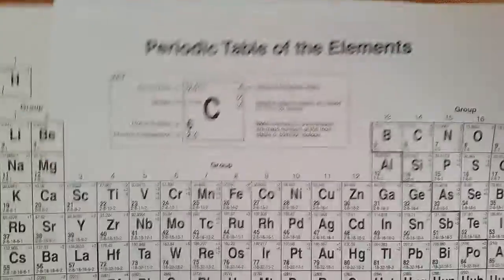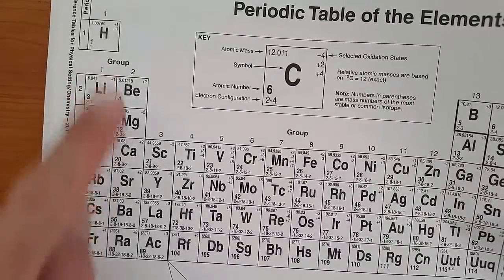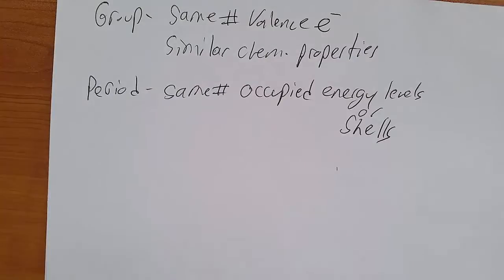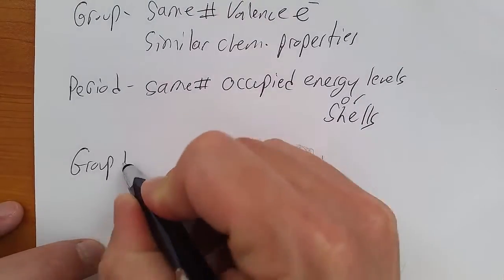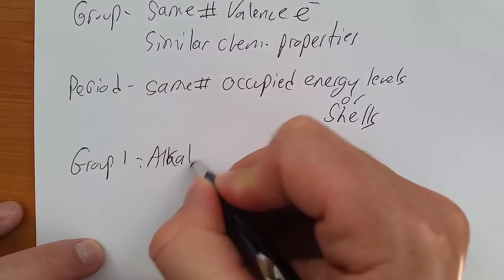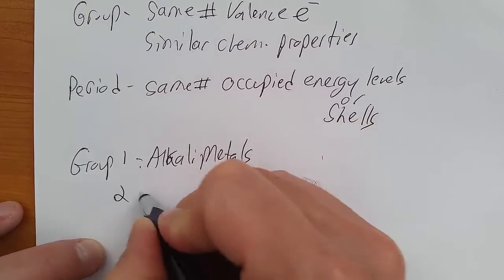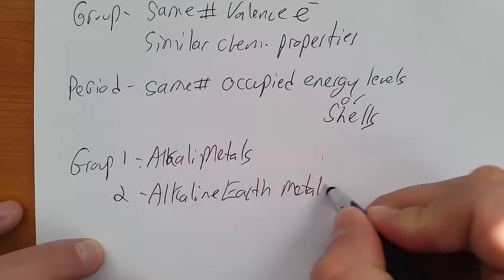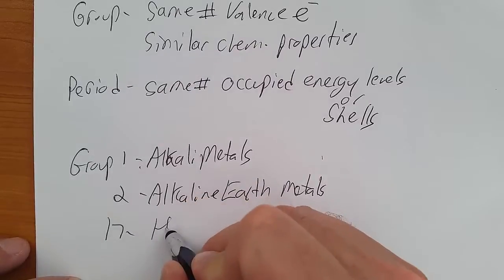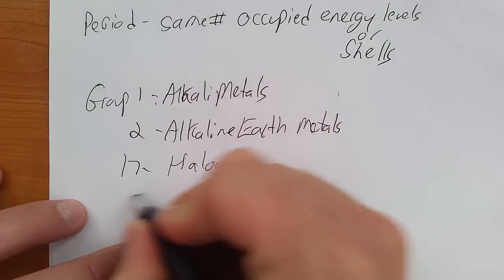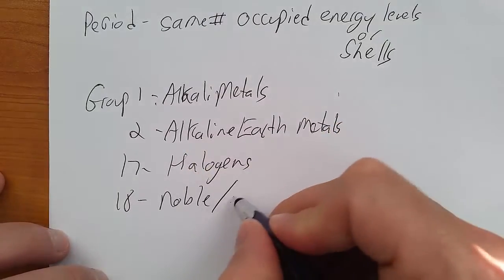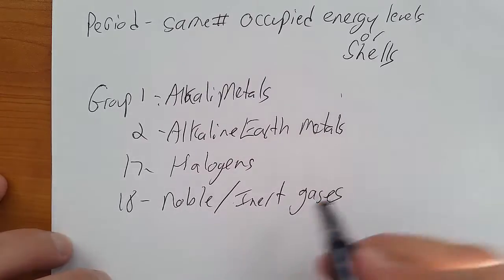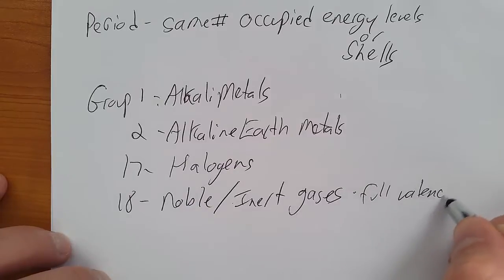Now we have to know the names of some of these groups. We have to know group 1, group 2, group 17, and group 18. So group 1 is the alkali metals. Group 2, alkaline earth metals. Group 17, halogens. And group 18, the noble or inert, meaning they don't react, gases. They have full valence shells.